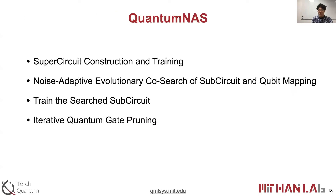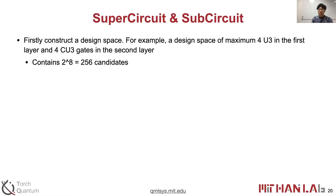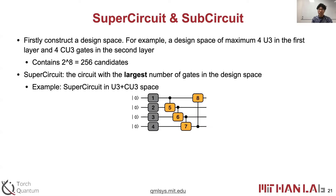Here we show the four steps of QuantumNAS. The first step is super circuit construction and training. We first need a predefined design space. For example, a design space with four U3 gates in the first layer and four CU3 gates in the second layer contains 2 to the power of 8, which is 256 candidates. If we train each of them individually on one NVIDIA GPU, that will take around 100 hours, which is very costly. Therefore, we enable efficient search with the help of a super circuit — the circuit with the largest number of gates in the design space. In our example, that super circuit contains 8 gates.